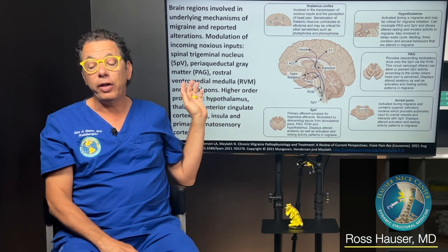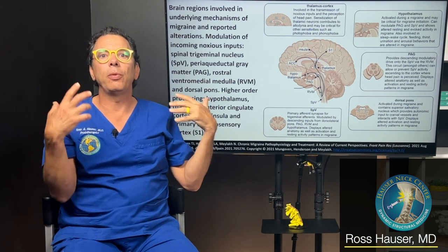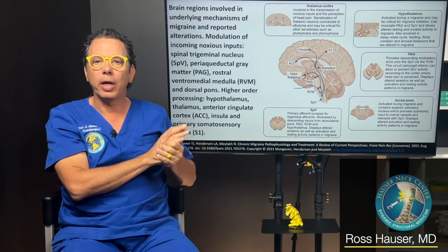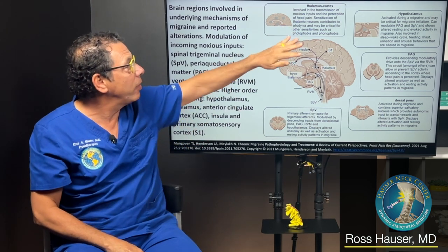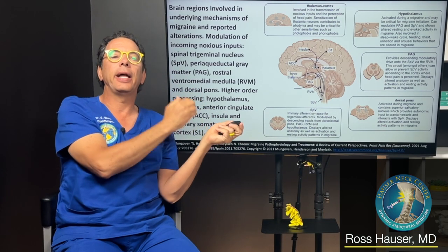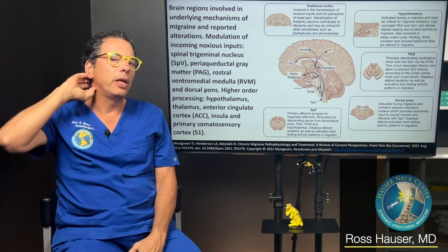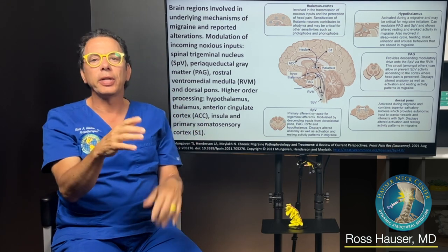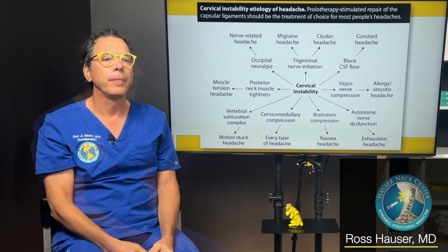When they do functional MRIs, they find certain parts of the brain are hyperactive during a migraine — including the thalamus cortex, hypothalamus, dorsal pons, and other areas. This is likely because of the increased blood flow from vasodilation. The cause is irritation in the upper neck, stimulating the trigeminal nerve, causing vasodilation, causing a migraine headache.